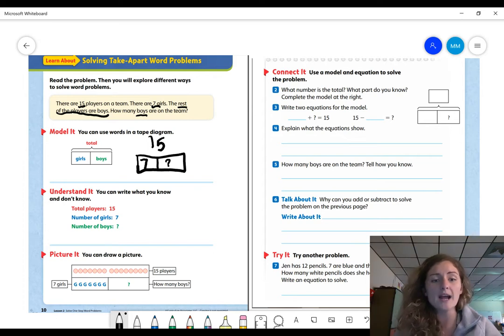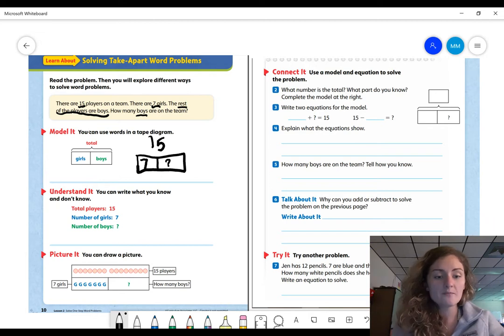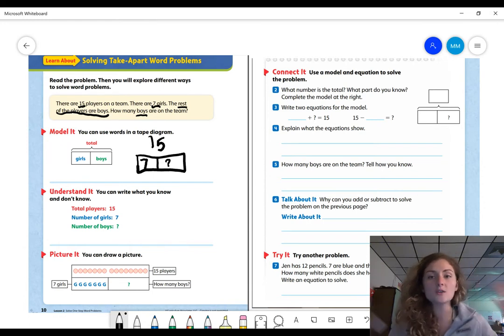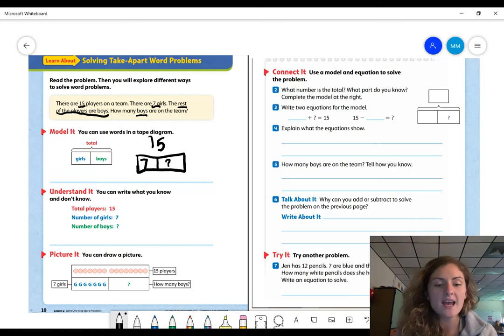How many boys are on the team? It also says that we can write what we know and don't know. So we know that all together there were 15 players. We know that seven of the players were girls, but we don't know what number was boys. So if we don't know it, we can write what we do know and try to problem solve to find what we don't know. We can also draw a picture. We know that we have 15 players all together and we know seven of those players are girls and the rest are boys. So look up here. They went ahead and drew 15 players. They showed us our whole and they compared with the part that we know.